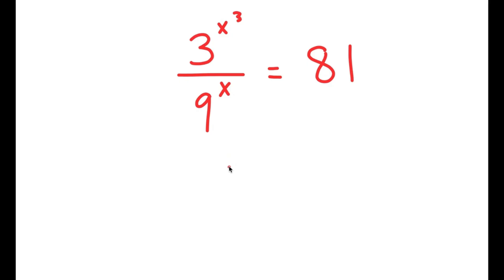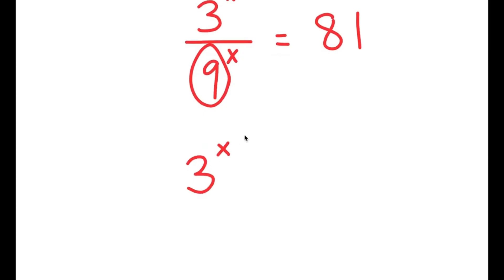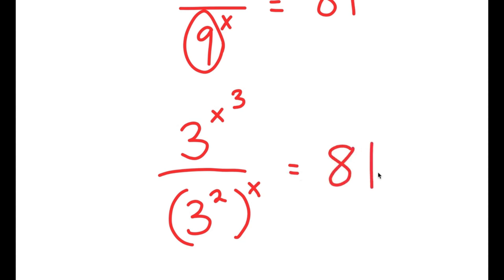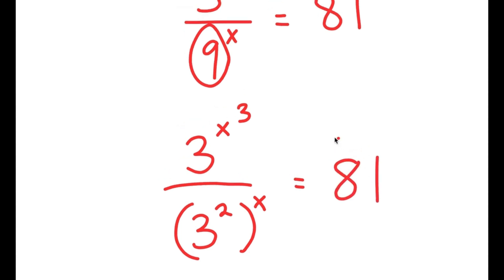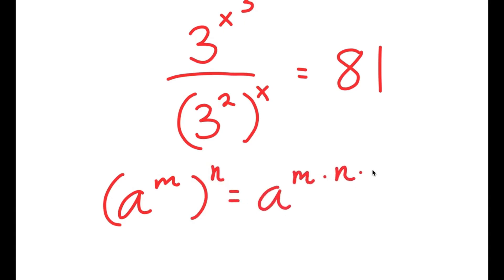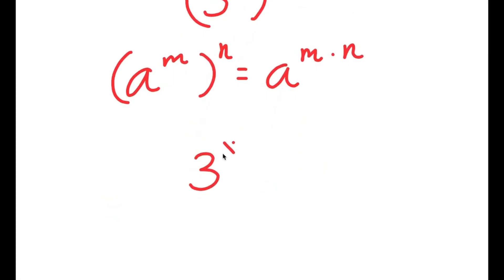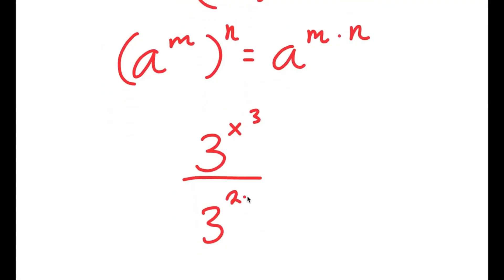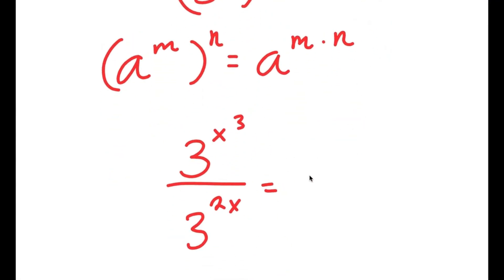To solve this, I'm going to first write 9 as 3 squared. So I get 3 to the power of x to the power of 3, over 3 squared to the power of x, is equal to 81. And if I have something in the form a to the power of m to the power of n, this is equal to a to the power of m times n. So 3 to the power of x to the power of 3, over 3 to the power of 2x, and 81 I'm going to rewrite as 3 to the power of 4.